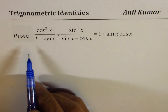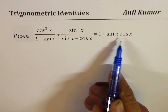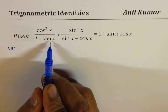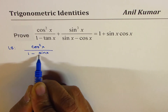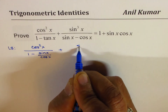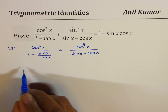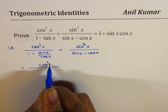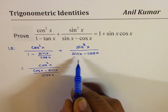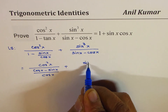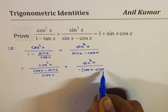Here is the last example: prove cos square x divided by 1 minus tan x plus sine cube x divided by sine x minus cos x equals to 1 plus sine x cos x. We will begin with the left side and write tan x in terms of sine over cos. So we have cos square x divided by 1 minus sine x over cos x, plus sine cube x divided by sine x minus cos x. Taking the common denominator, we get cos square x times cos x minus sine x divided by cos x. We could write the second term as sine cube x, taking minus common so we get cos x minus sine x.